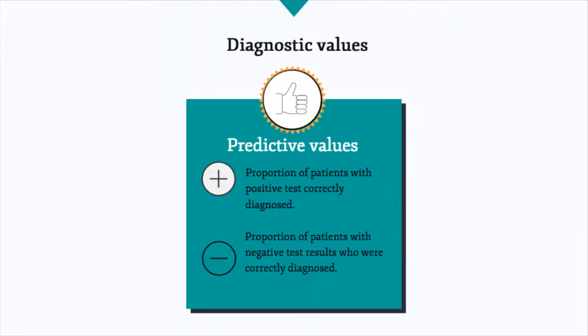While sensitivity and specificity measure the accuracy of a diagnostic test, they do not provide the probability of the diagnostic value of the result of the test. Predictive values provide the proportion of patients who are correctly diagnosed. The positive predictive value is the proportion of individuals with positive test results who were correctly diagnosed, while the negative predictive value is the proportion of individuals with negative test results who were correctly diagnosed.